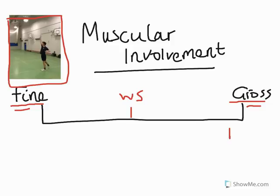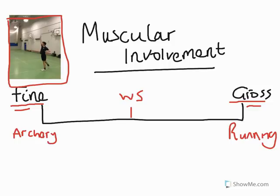Better examples: on the gross side we might consider running, which uses large muscle groups and finesse is not the important thing. On the fine side, with small muscle groups where finesse and accuracy is everything, we might be talking about an archery shot.